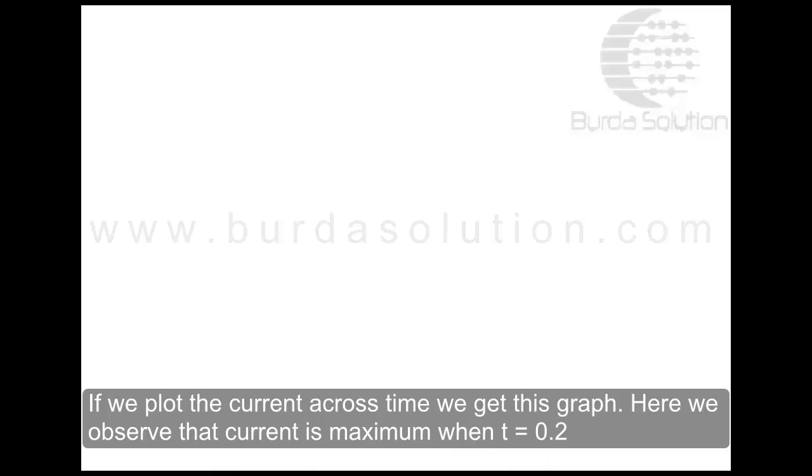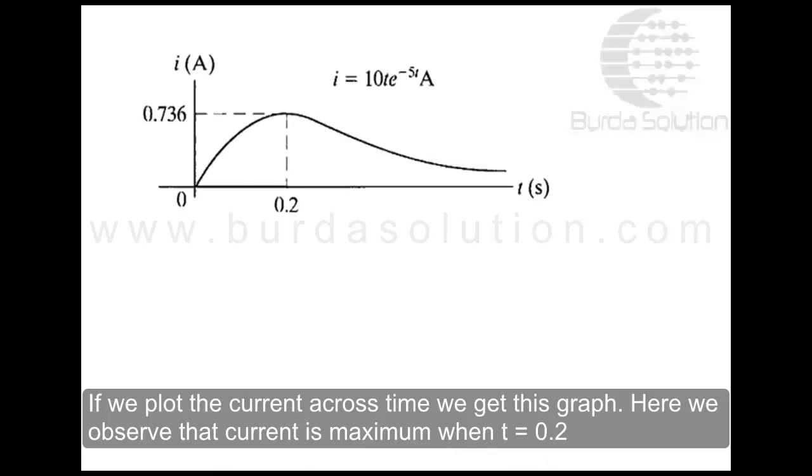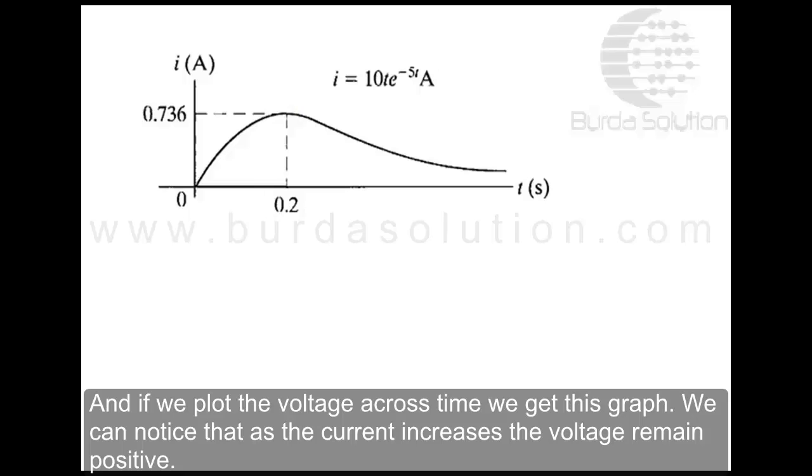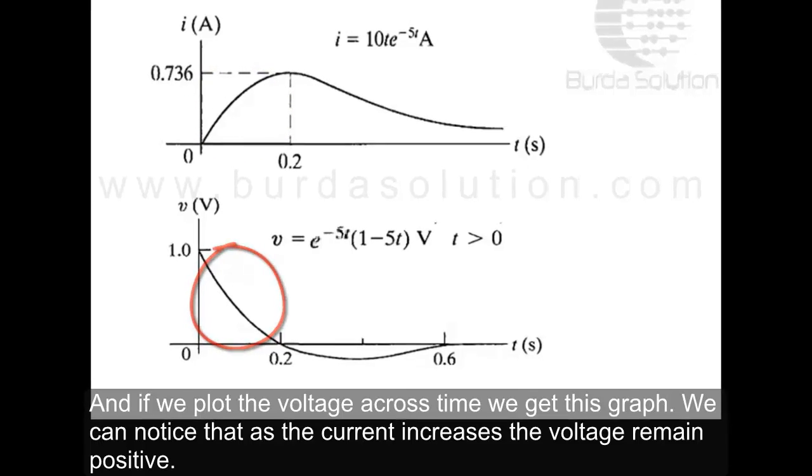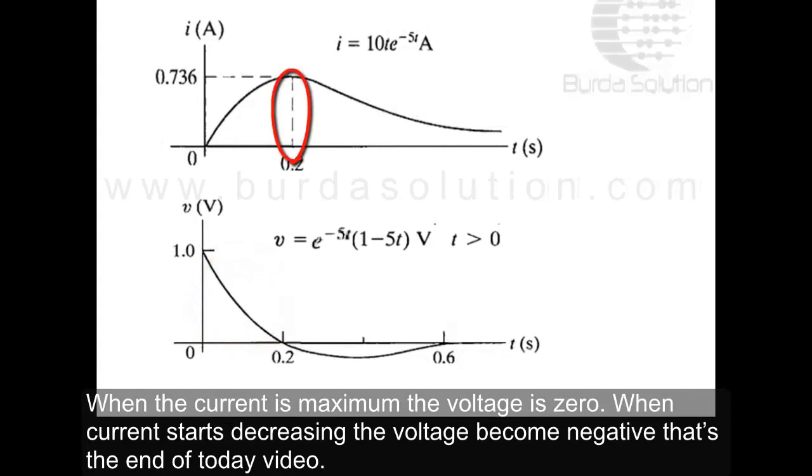If we plot the current across time, we get this graph. Here we observe that the current is maximum when t equals 0.2, and if we plot the voltage across time, we get this graph. We can notice that as the current increases, the voltage remains positive. When the current is maximum, the voltage is zero, and when the current starts decreasing, the voltage becomes negative.